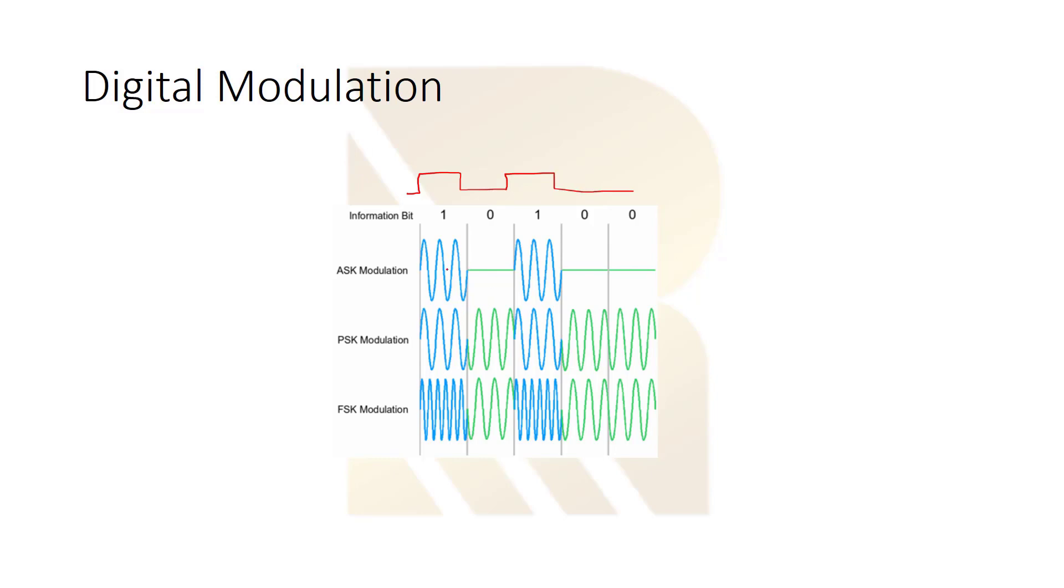How can we modulate this data using three types of digital modulation? The first one is ASK modulation. It's quite simple. If we have a carrier, how do we modulate this? When we have a 1, we send our carrier, and when we have data 0, we don't send our carrier.